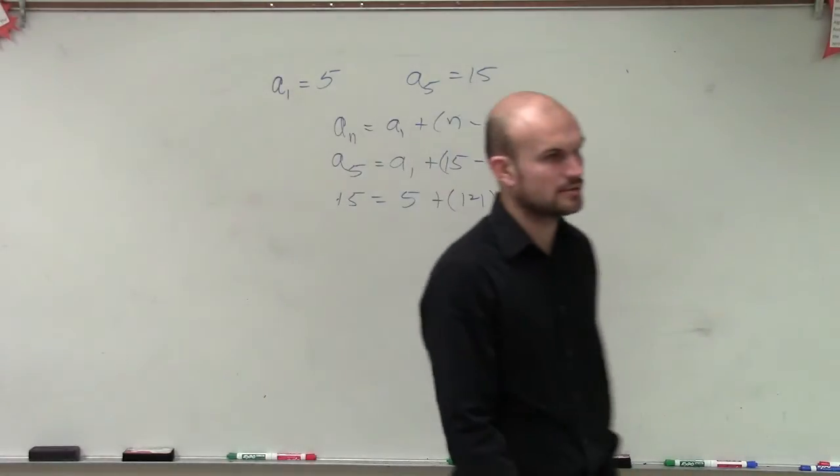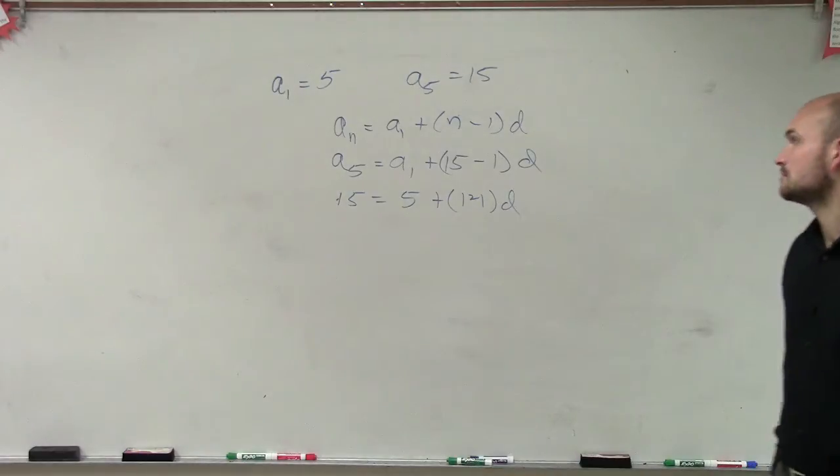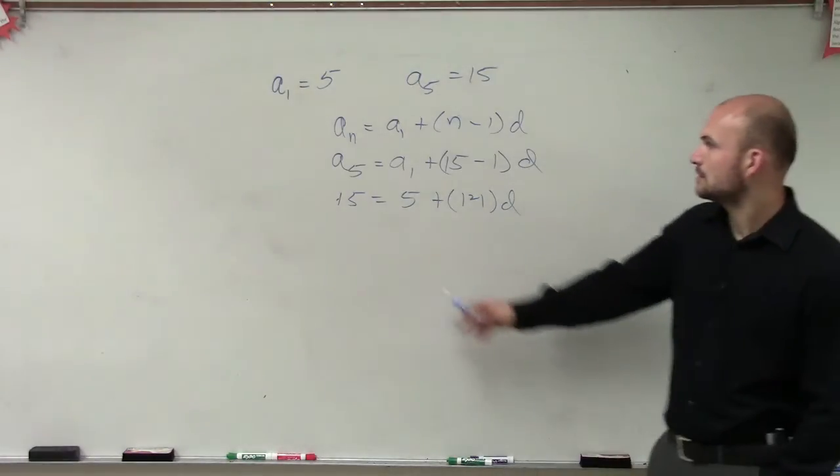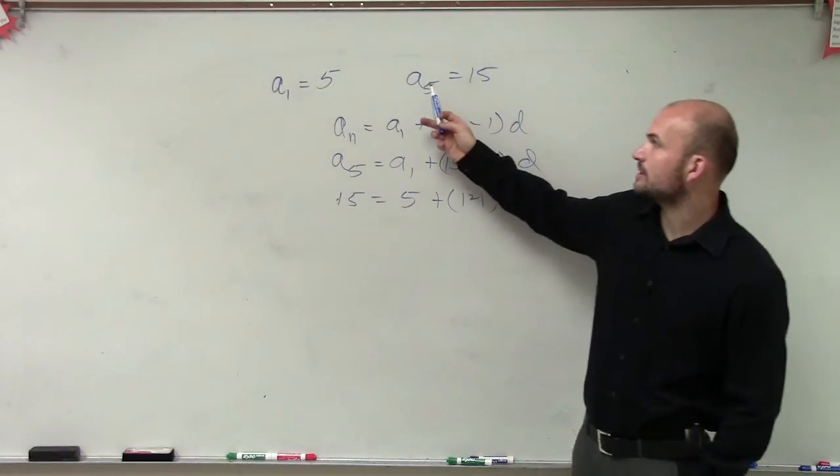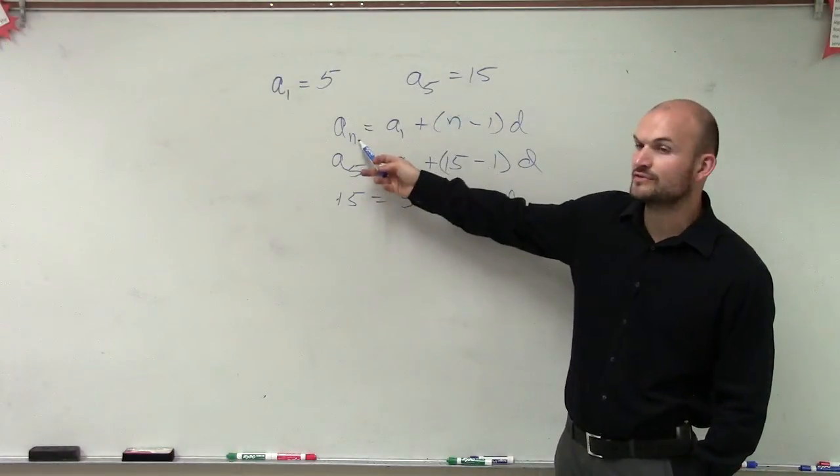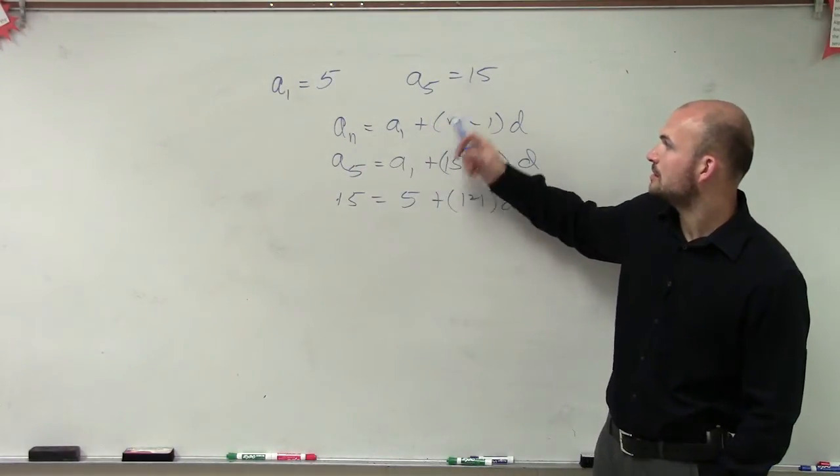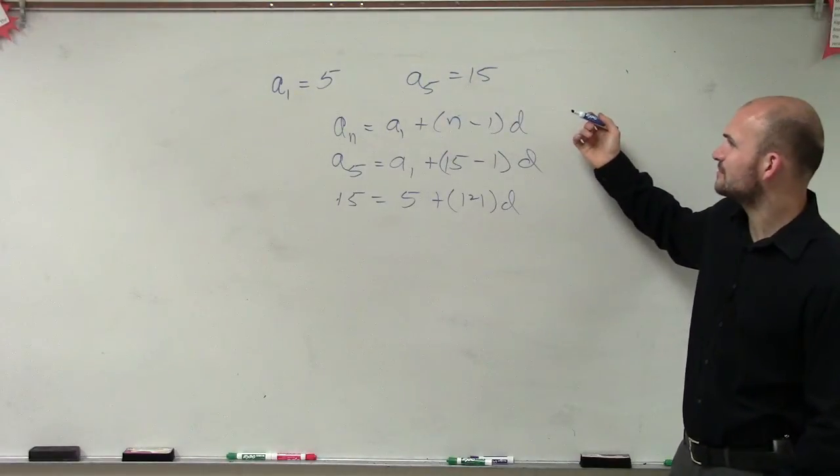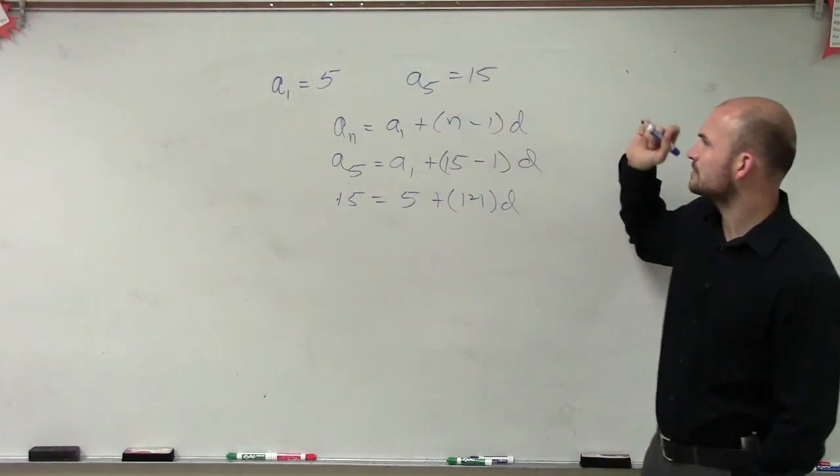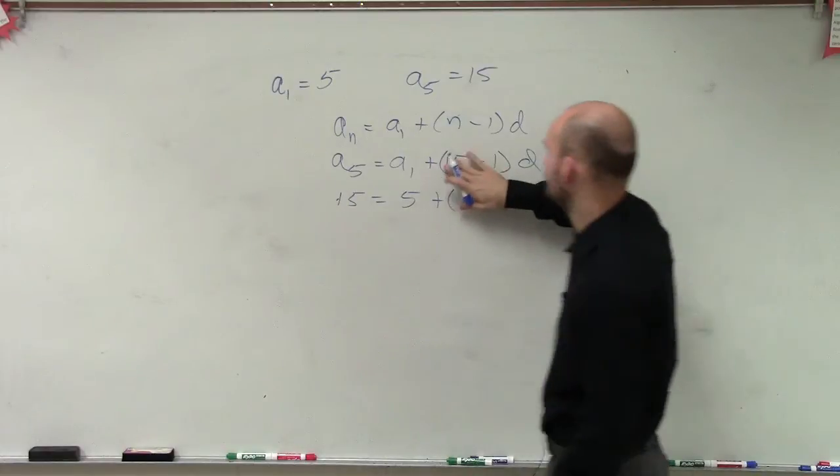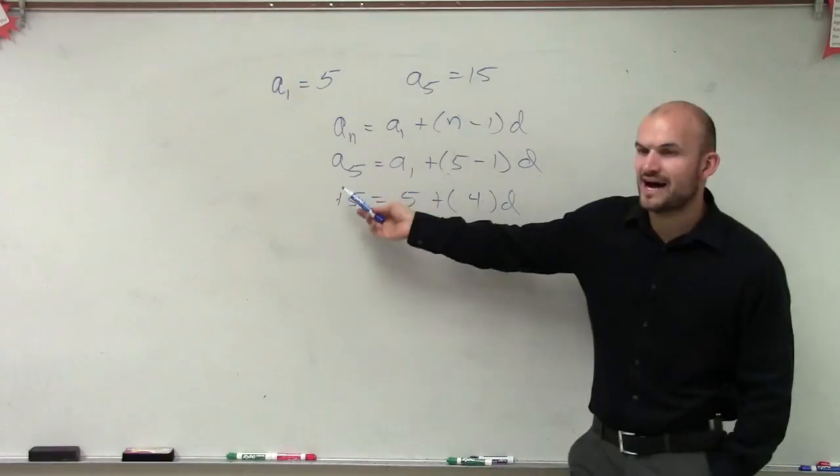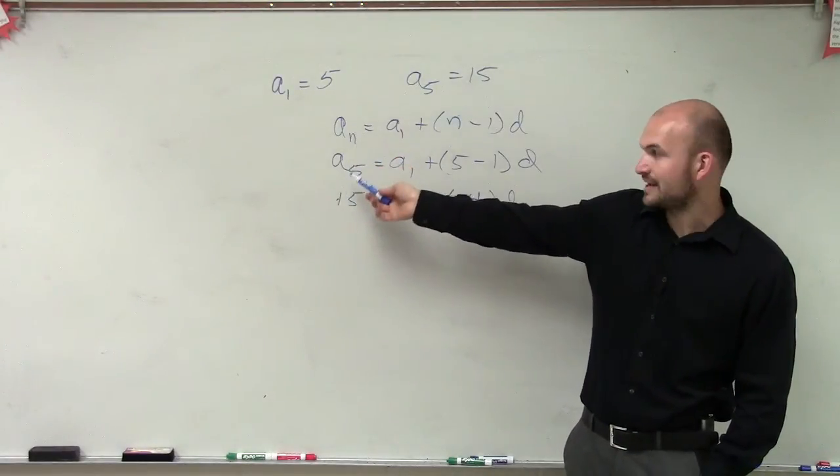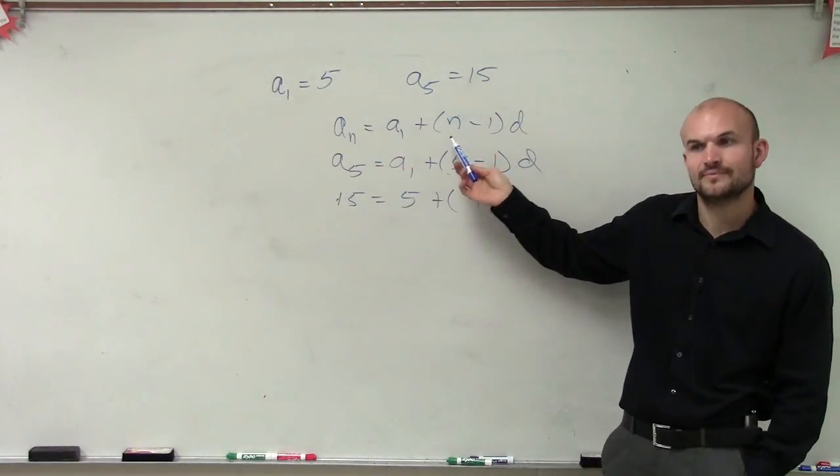Does that look right? Follow what I've done so far? That 15? That one. Right. Because we're putting in a sub 5, so I'm putting the 5 in for the n. I'm sorry, that should be a 5. Thank you. Because you put the 5 in for the n to find a sub n, so the 5 goes in for the n here.